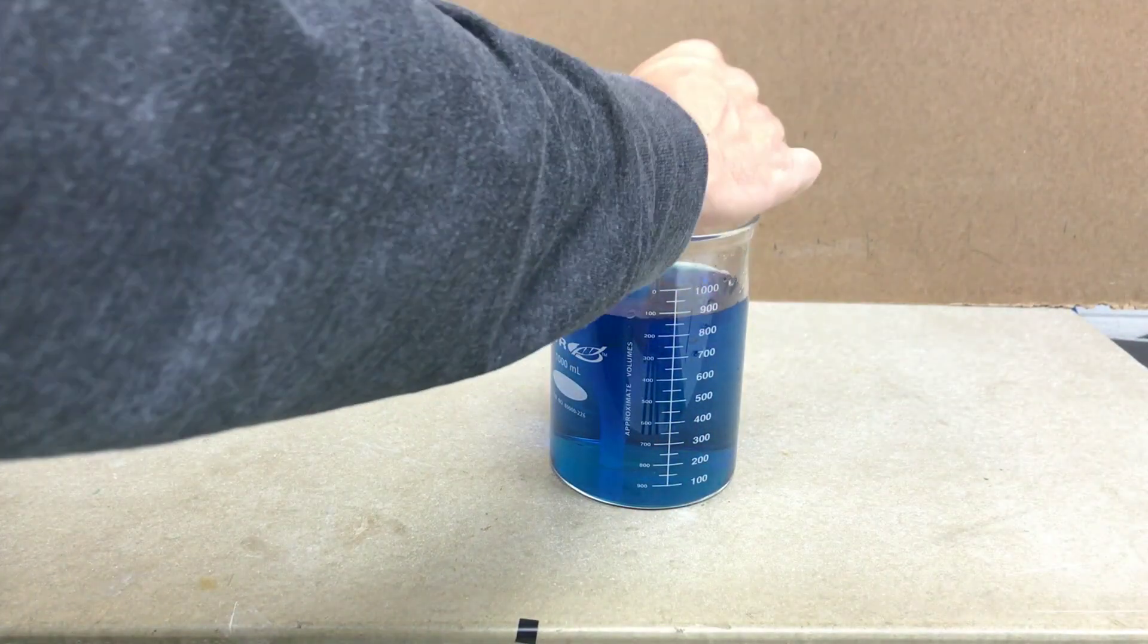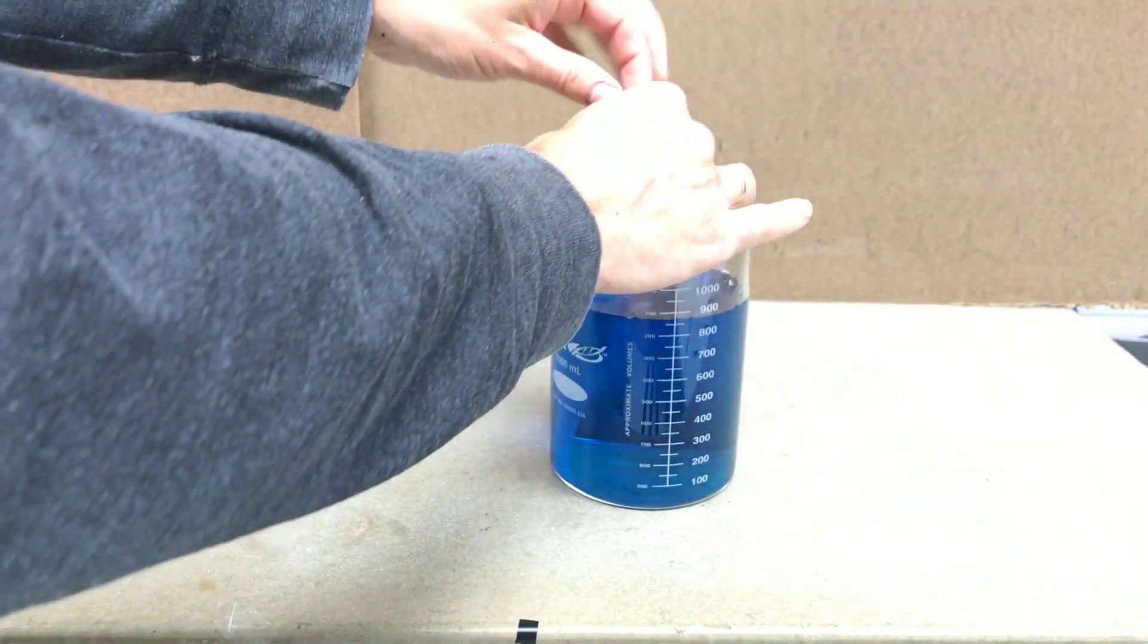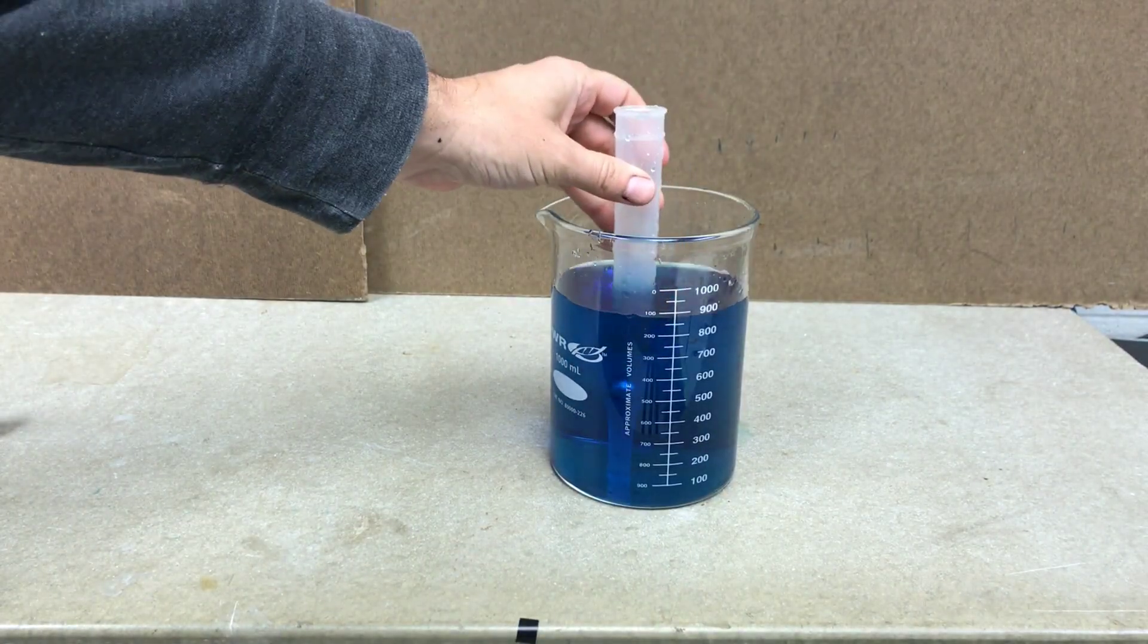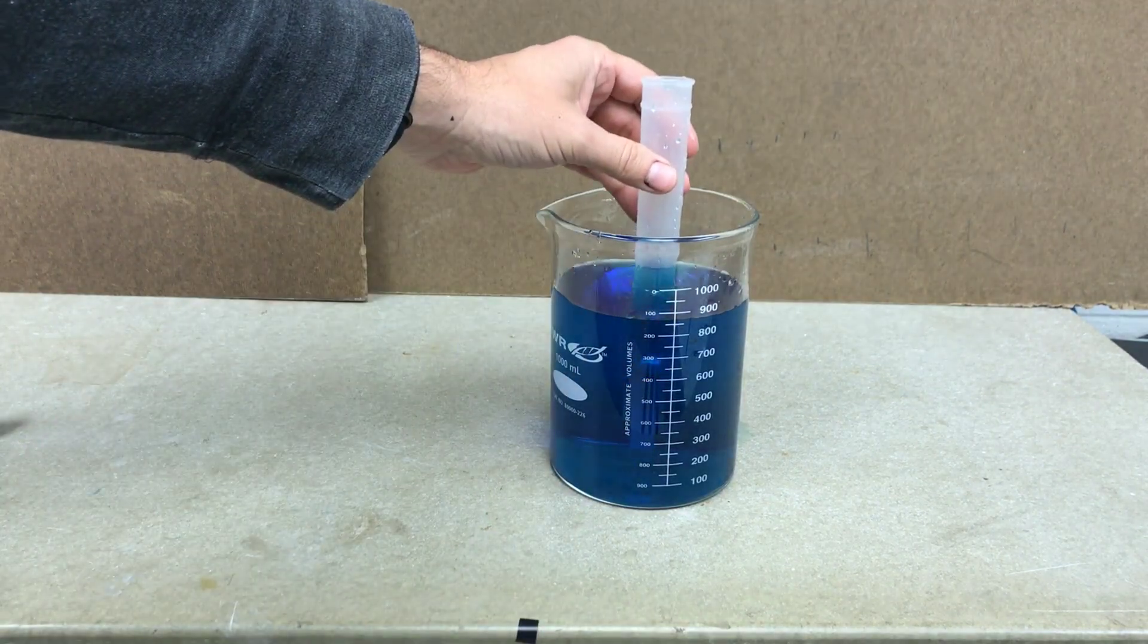So I have the water in there. I'm going to add the ball bearing. Just pop it in there. Now you can see the ball bearing's in the bottom. Now all I'm going to do is shake it and we can watch the water level rise.